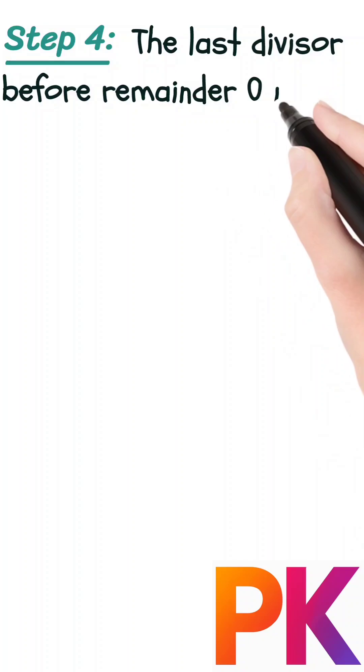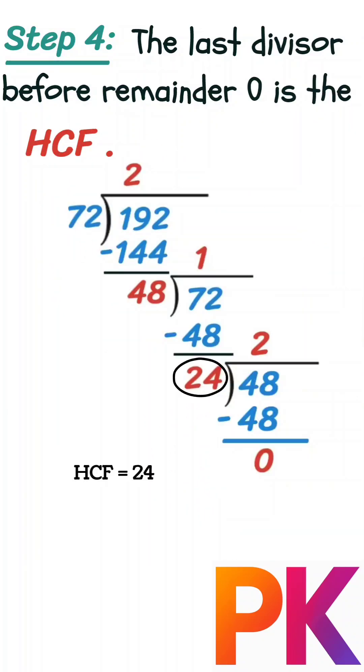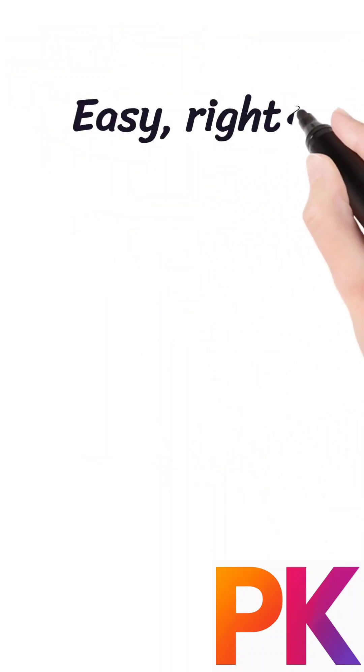The last divisor before remainder 0 is the HCF. So the HCF of 72 and 192 is 24.